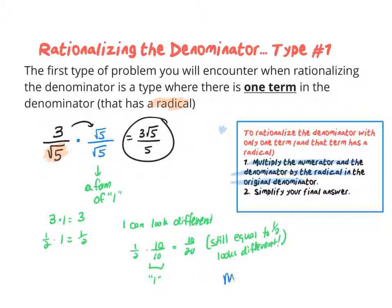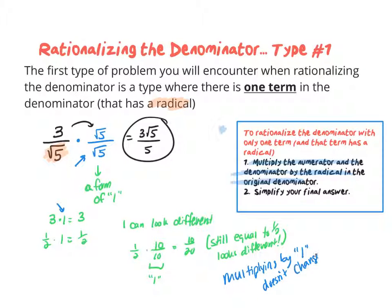Maybe I write it as 1, or maybe I write it as root 5 over root 5. But multiplying by one doesn't change the value — it might change the way it looks, but it's still the same value.